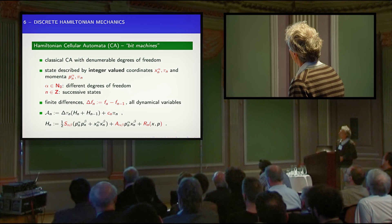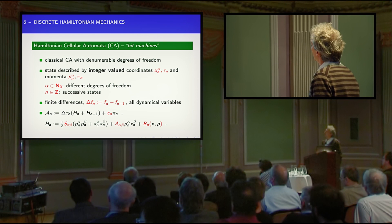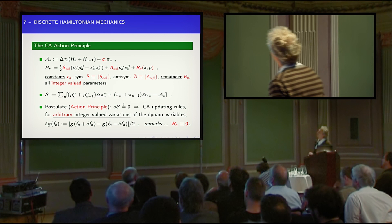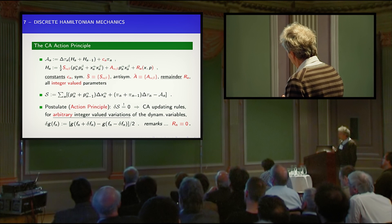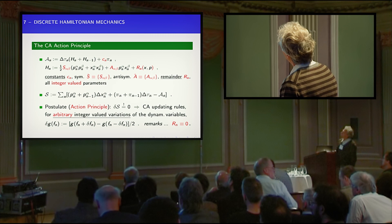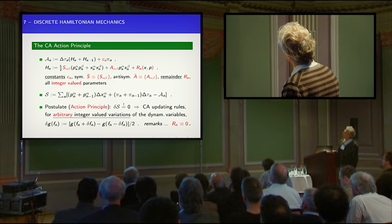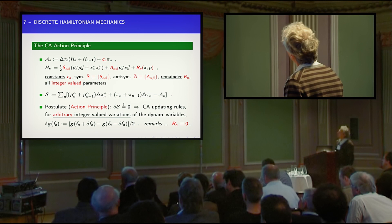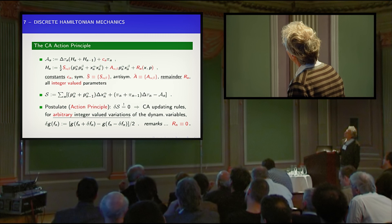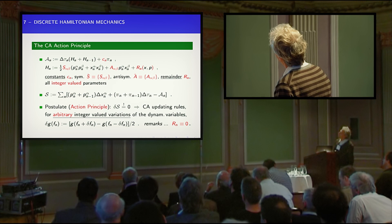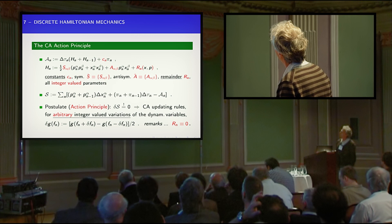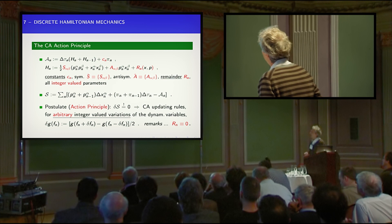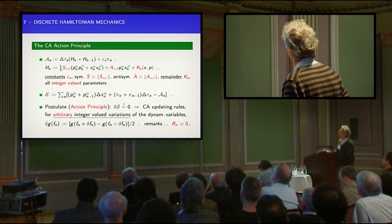I introduce some abbreviations which are useful for the following. We have finite differences for any of these variables. Now this is perhaps the most important slide — we come to the action principle. In this abbreviation there are certain quantities in red which are all parameters of the model: a symmetric matrix, an anti-symmetric matrix, a constant, and a remainder term which is supposed to take care of polynomial terms of higher order than the quadratic terms. The action reminds you of a standard action in Hamiltonian formulation — it's not so unusual, just that everything is discrete and integer.